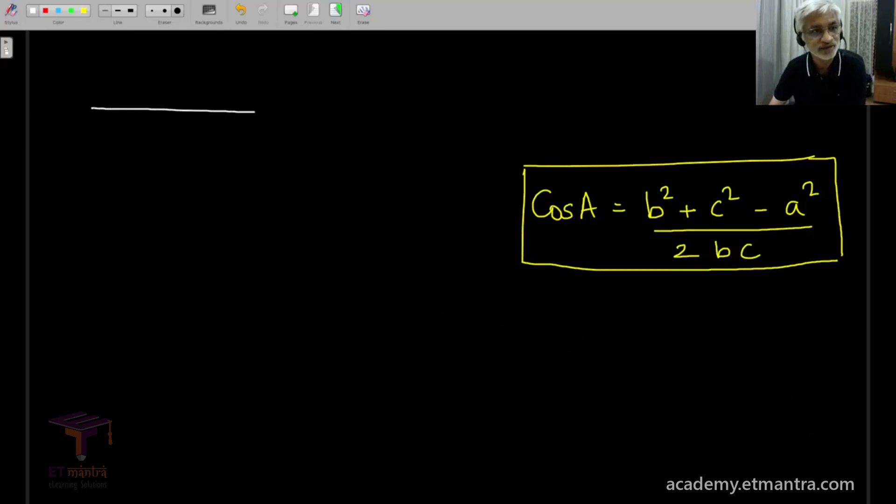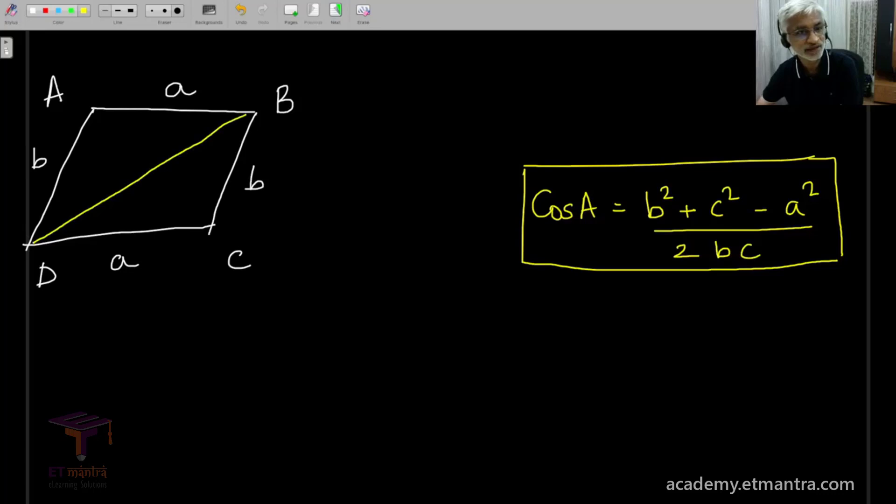So our first gift from the cosine rule in this category is the following. Consider the parallelogram and we will label it as A, B, C, D, and the opposite sides of the parallelogram are equal. So we label it as such and let us call the diagonals as d₁ and d₂. So this diagonal is d₁ and the other diagonal is d₂.